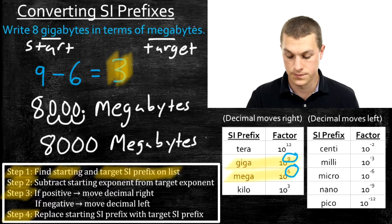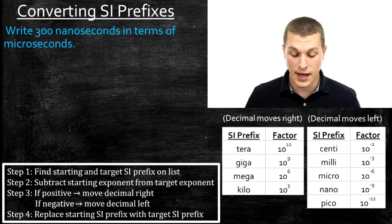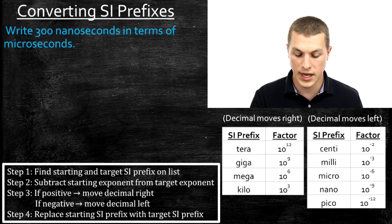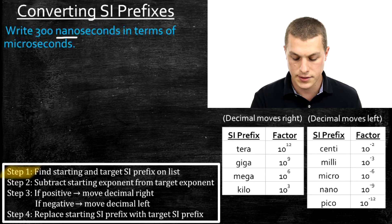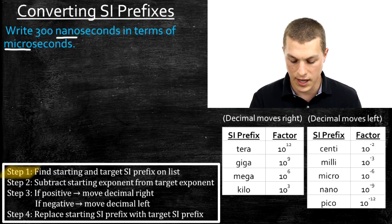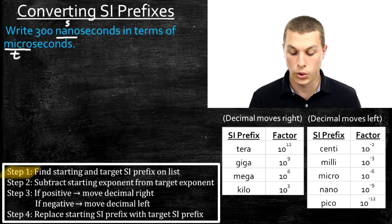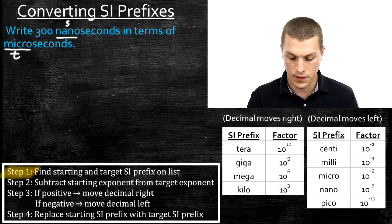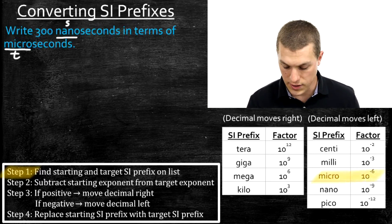Let's do a few more examples. Next, we're going to go from 300 nanoseconds to that same amount of time expressed in microseconds. We want to find our starting and target SI prefixes — that's step one. Our starting SI prefix is nano and our target SI prefix is micro. We want to go from nanoseconds to microseconds, so we identify both on our list.